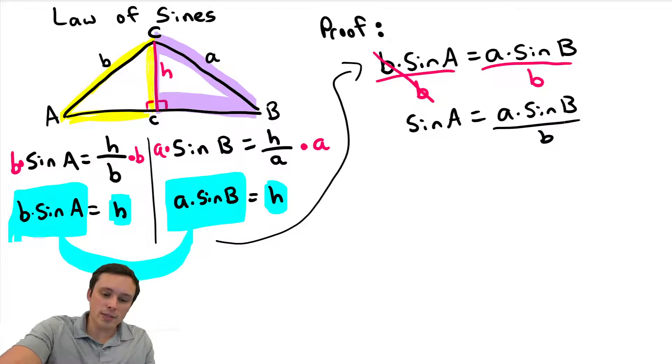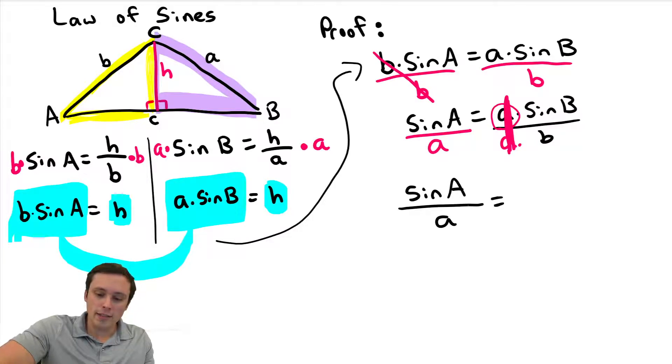And we're almost there, guys. One last little bit, which is we don't want this A here. How are we going to get rid of that A? We're going to divide by it. Okay, so if we divide by A, this is going to reduce down to a 1, and we're going to have to do it to both sides of the equation, again, to keep two things equal. So that's going to leave us with sine A over A is equal to sine B over B. And that's it, guys.